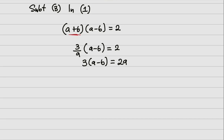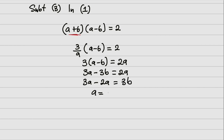Expanding the bracket, I have 3a minus 3b equals 2a. Collecting like terms: 3a minus 2a equals 3b, so a equals 3b. I will label this equation four.